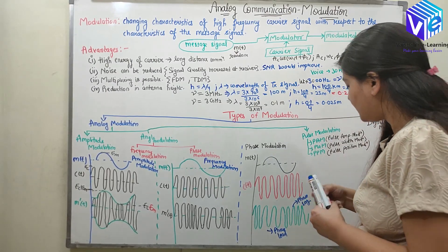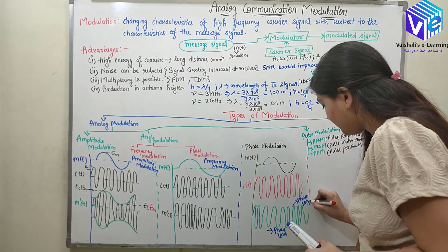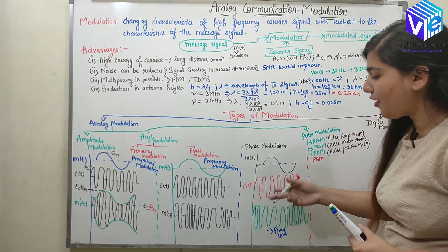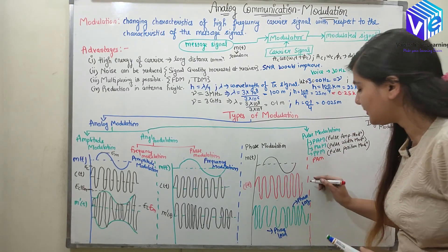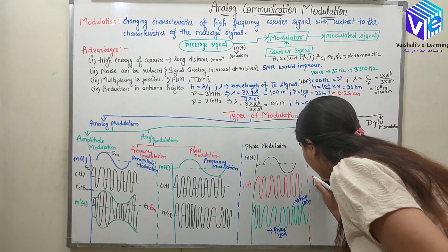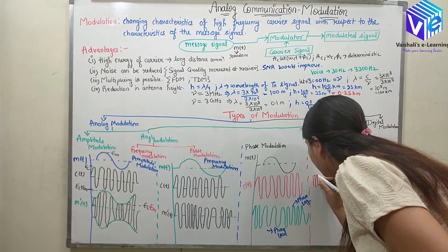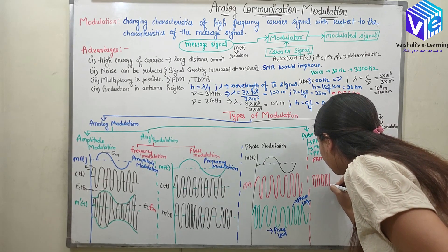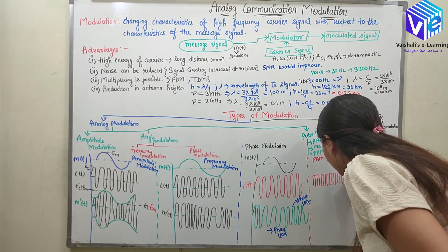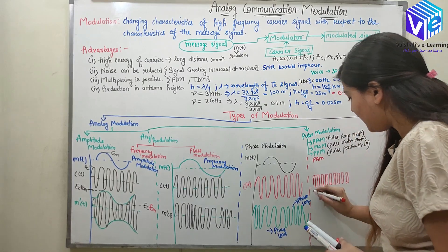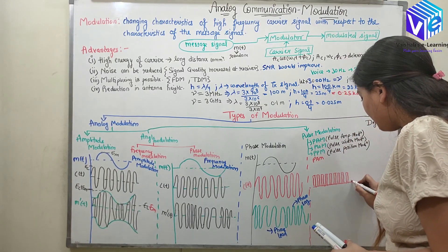Now firstly I will talk about pulse amplitude modulation. Here, instead of a continuous time carrier signal, I have pulses. The carrier has pulses of deterministic characteristic — but it is not continuous, so you can see there are breaks in between. This is my P(t).